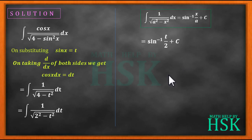So therefore the integration of 1 upon square root of 2 square minus t square dt would be equal to sine inverse of t upon 2 plus C. But we had substituted sine x equals t, so to obtain the final answer we are going to place t as equal to sine x. So this is my required answer: sine inverse of sine x upon 2 plus C is the required answer.